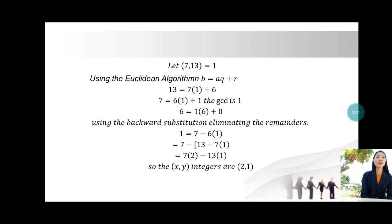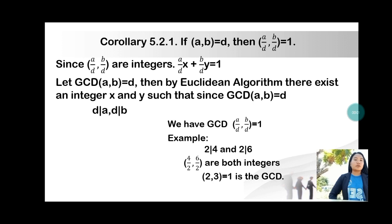Corollary 5.2.1: If gcd(a, b) = d, then gcd(a/d, b/d) = 1. Since a/d and b/d are integers, a/d · x + b/d · y = 1. Let gcd(a, b) = d; then by the Euclidean algorithm there exist integers x and y such that since gcd(a, b) = d, d divides a and d divides b, we have gcd(a/d, b/d) = 1.